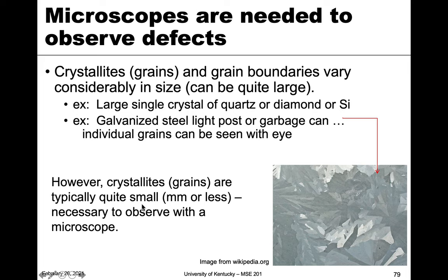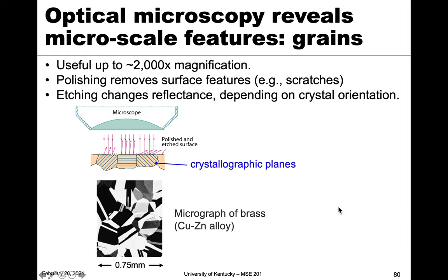However, most grains are quite small — we're talking on the millimeter scale or less, usually on the micron scale. So we typically need a microscope to view those smaller features; the large visible grains are kind of the exception to the rule. We need an optical microscope to reveal these micro-scale features like grains and grain boundaries. Optical microscopy is useful up to about 2,000 times magnification.